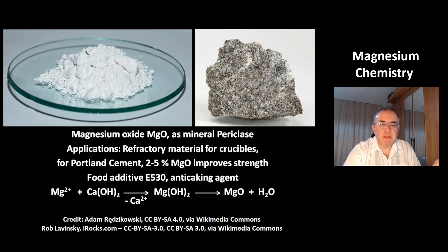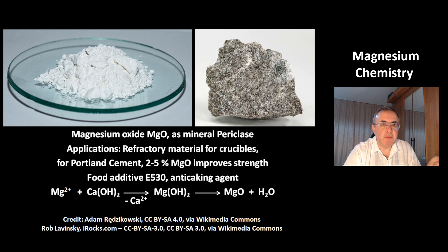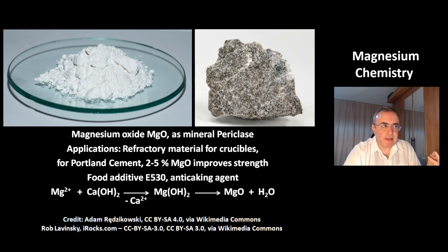This is a picture of magnesium oxide, MgO. It is a mineral called periclase. Its applications include refractory material for crucibles, and it is added to Portland cement — 2.5% magnesium oxide improves the strength of the cement. MgO is also used as food additive E530, as an anti-caking agent.